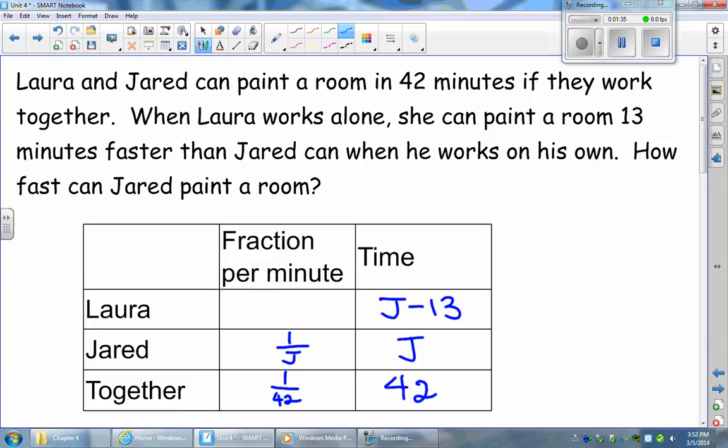And when Laura's working by herself, she can complete one out of j minus 13 fractions or parts of the room per minute. Whenever you see the word per, you want to think of division or a fraction. So it's the amount that they can do in total divided by the total number of minutes.